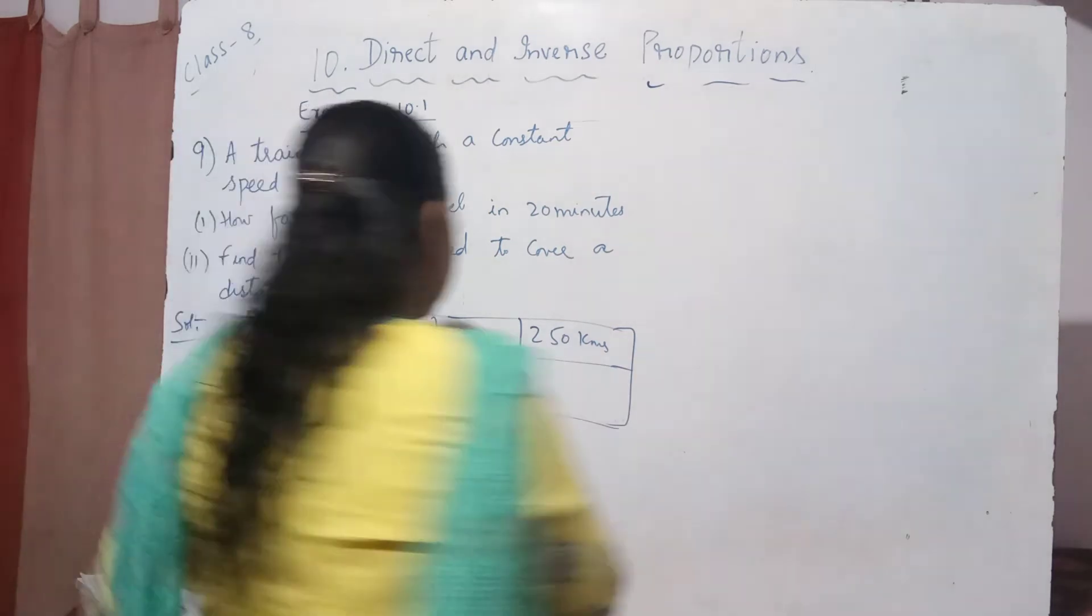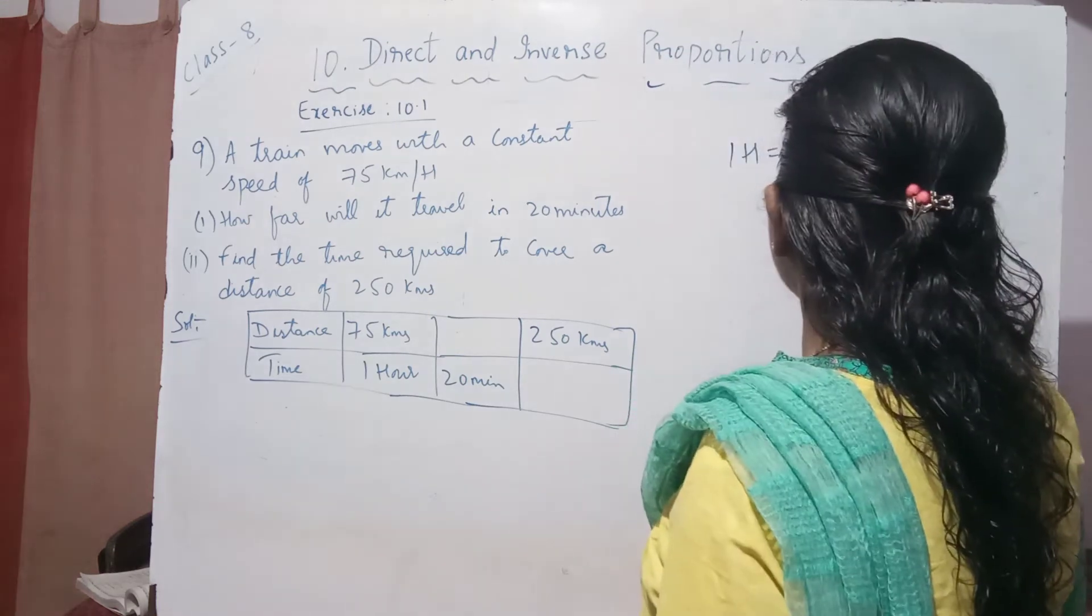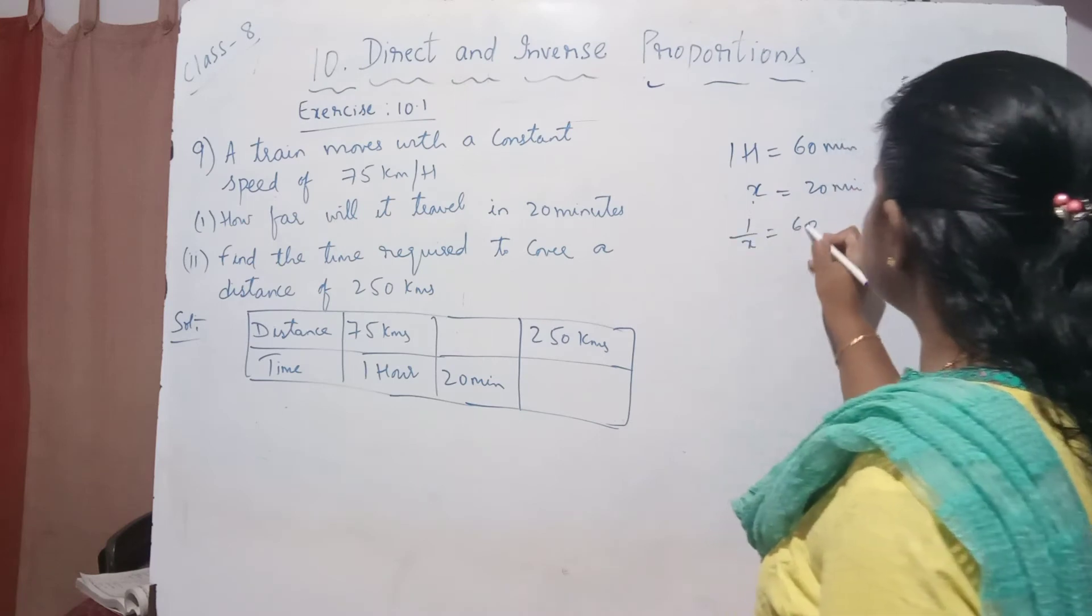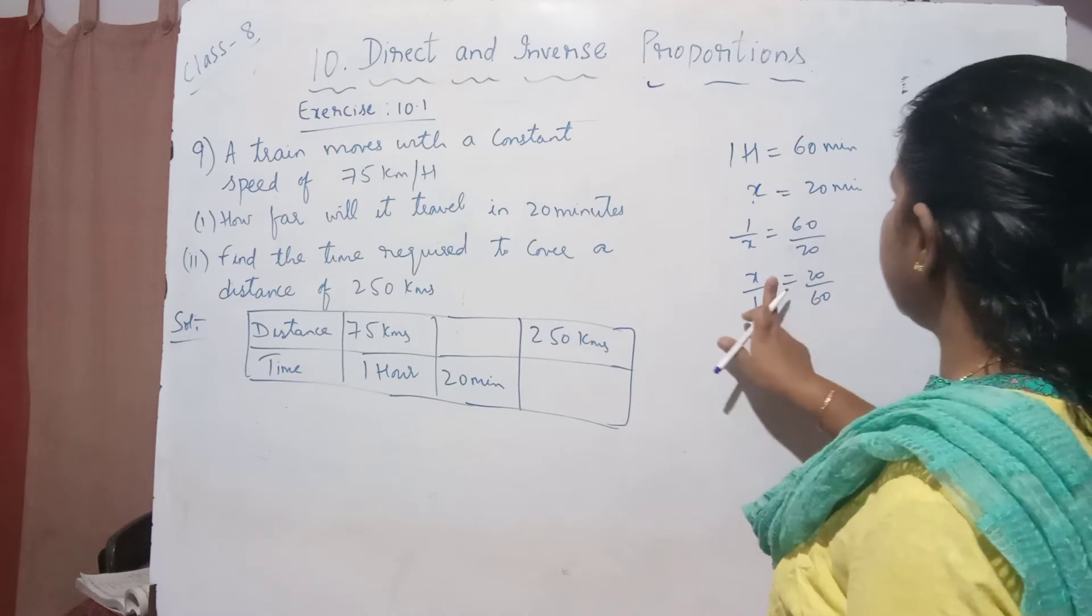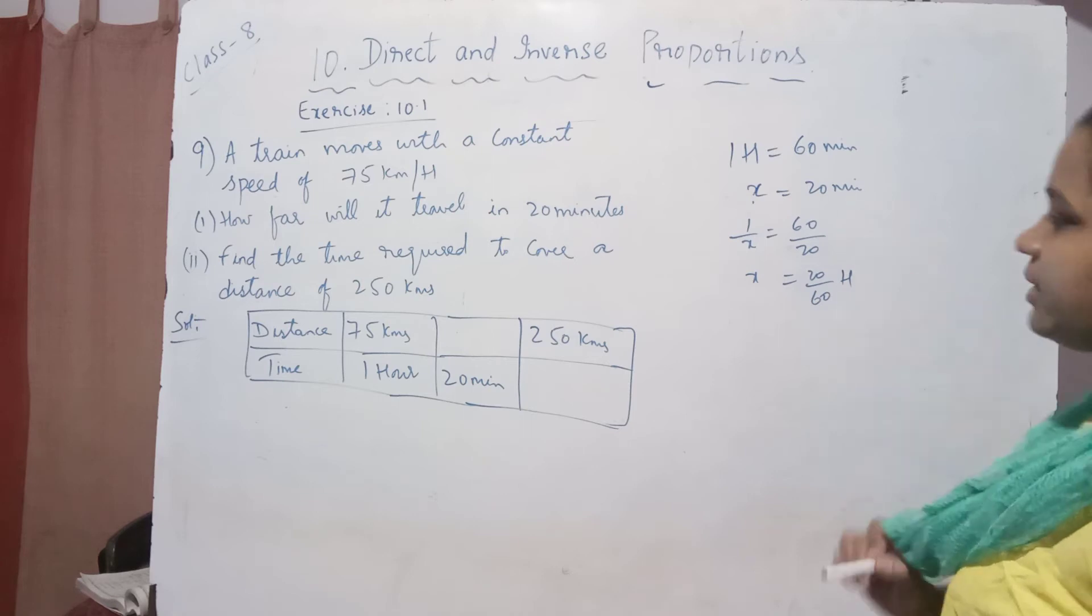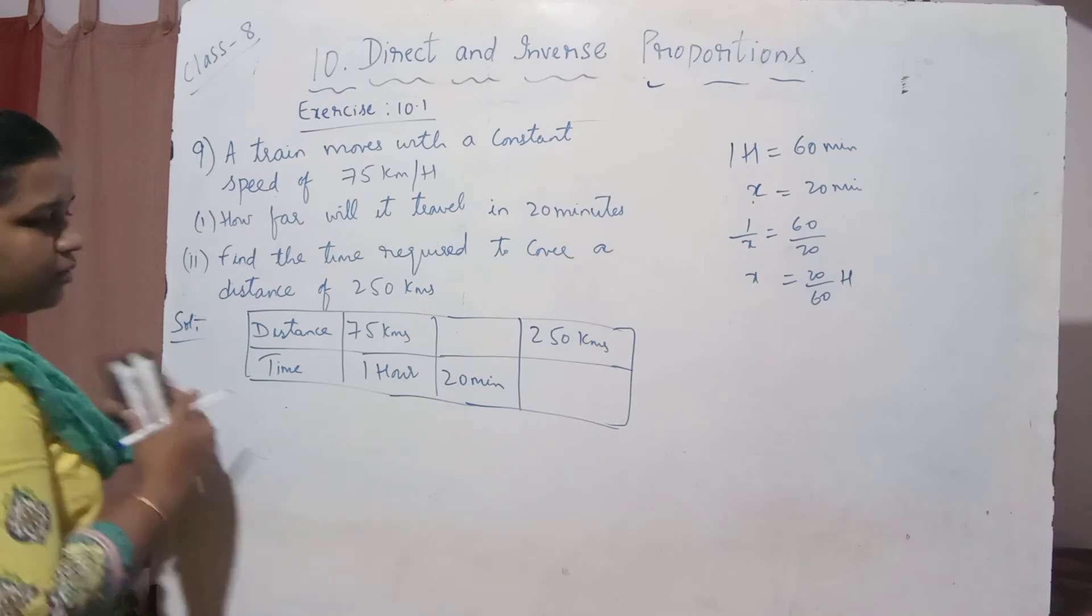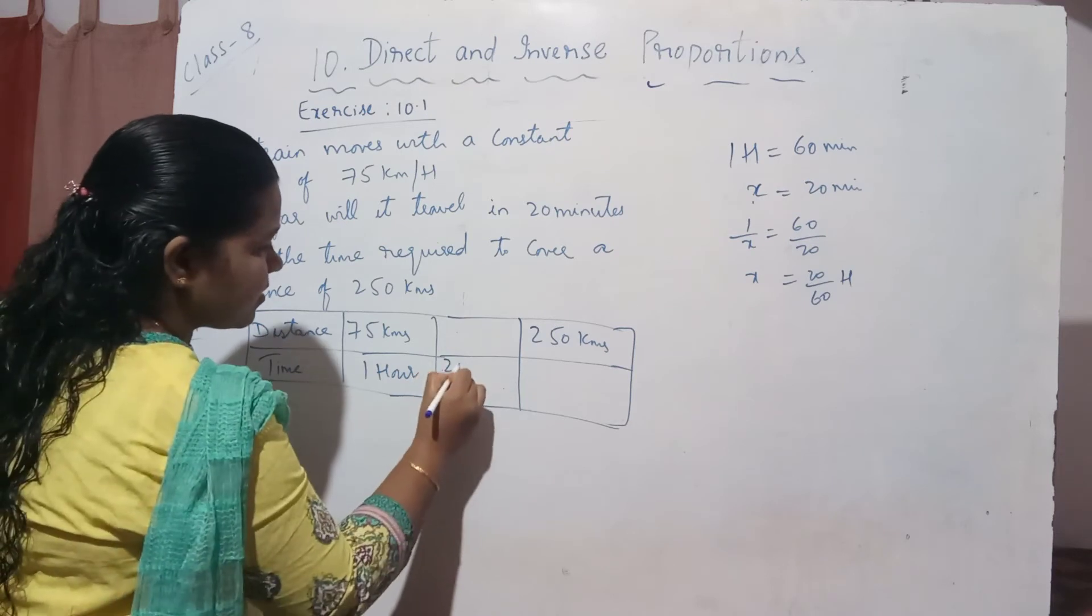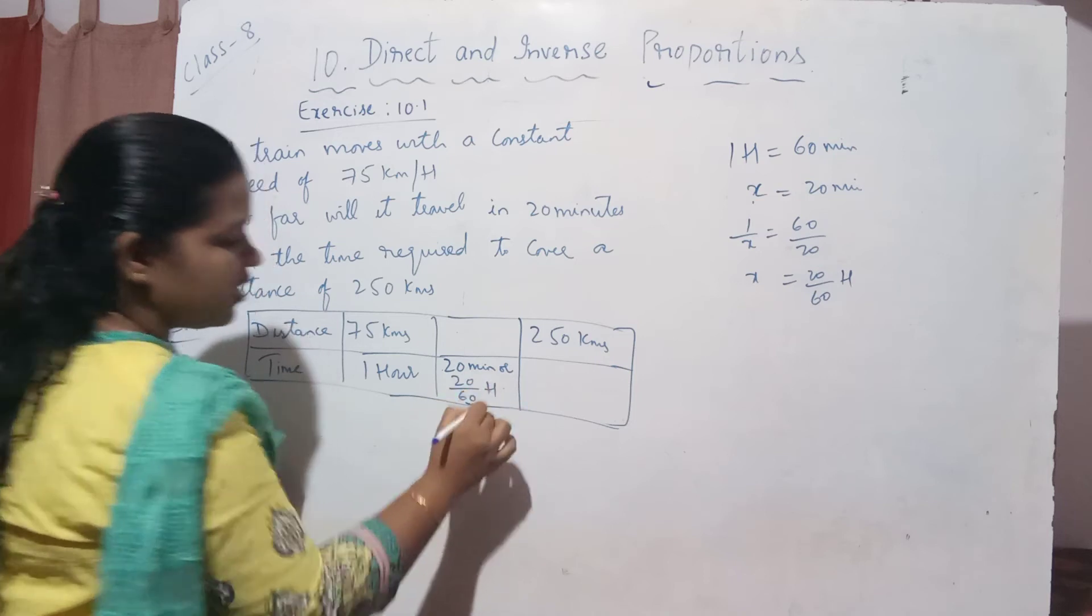Like in the previous problem, we know 1 hour is equal to 60 minutes. So 20 minutes is equal to how many hours? If you take this as x, 1 by x equals 60 by 20. Write the reciprocal: x by 1 equals 20 by 60. x equals 20 by 60 hours. So 20 minutes equals 20 by 60 hours. I will write 20 by 60 hours. Capital H is hours.